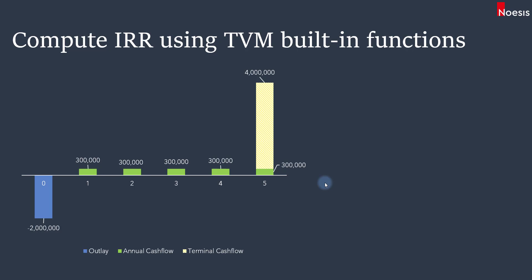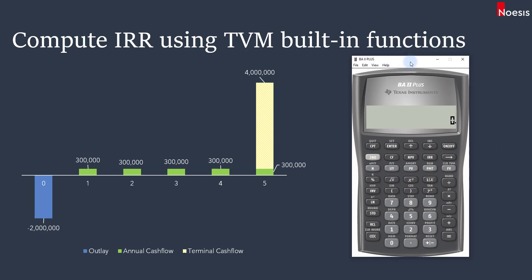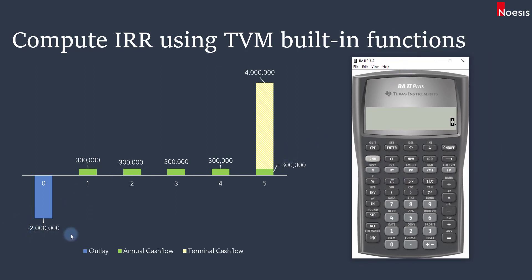I'm going to compute the IRR using the time value of money built-in function in the calculator. First, clear the worksheet by pressing Second FV to clear the inputs in the five buttons. The two million dollars here will be an outflow, so that will be PV, the present value. Type two million, press the negative sign, and then click PV to save the number.